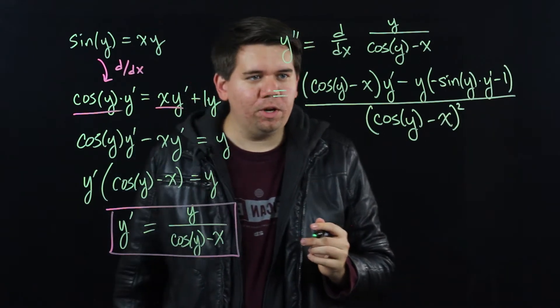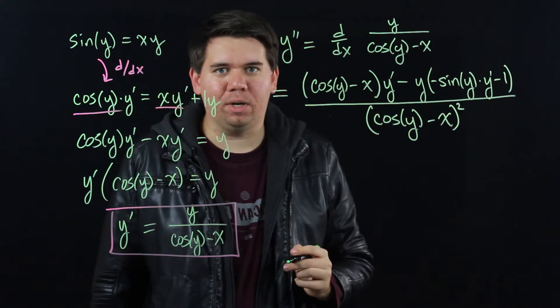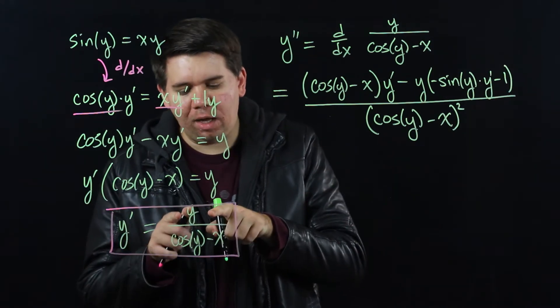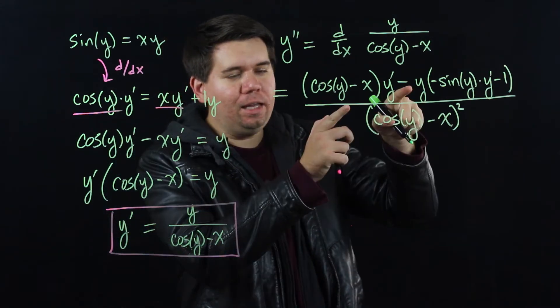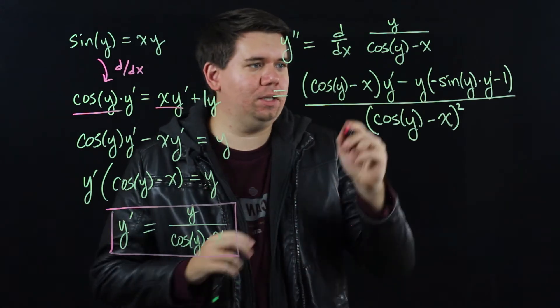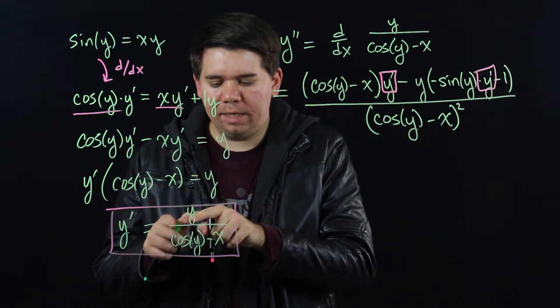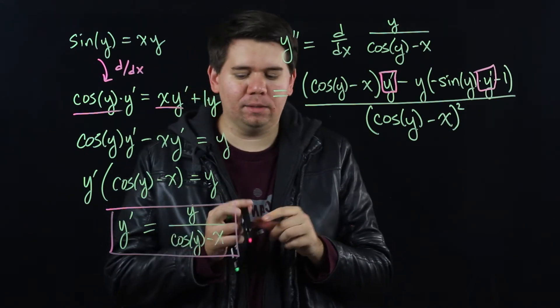Pretty good. But notice our answer has x's and y's and y primes. Yet we know what y prime is, so we can plug our value for y prime into the solution. Wherever we see a y prime, we're just going to plug in what we know y prime to be, y divided by cosine of y minus x.